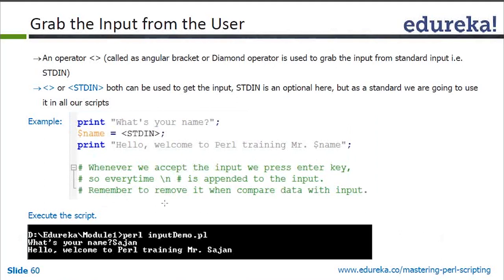Whenever we accept input we press the enter key, so a newline (slash-n) is appended to the input. Remember to remove it when comparing data with input — there are functions like chop and chomp in Perl for this. Chomp removes the trailing newline. We must know that slash-n is appended to the input in normal cases, and we must use the right function to compare with the input.